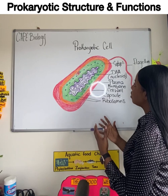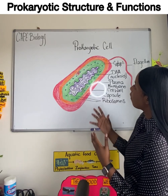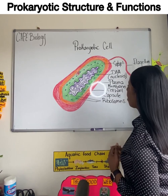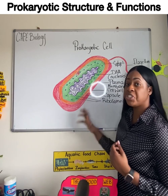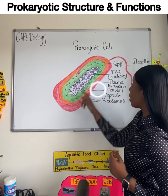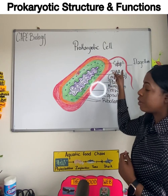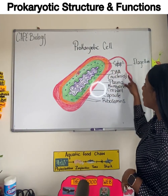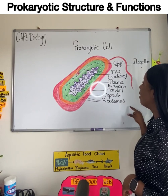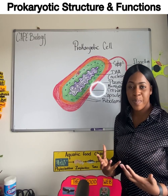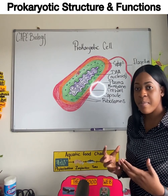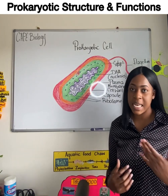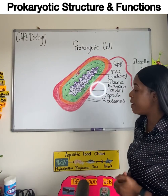One of the features of the prokaryotic cell that should stand out to you is this structure here — it appears like a tail. It's called the flagellum, and it enables the cell to move from place to place in its environment.